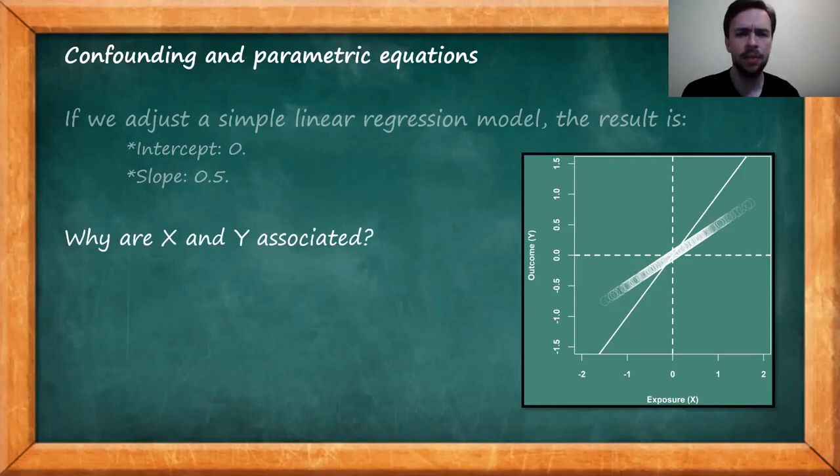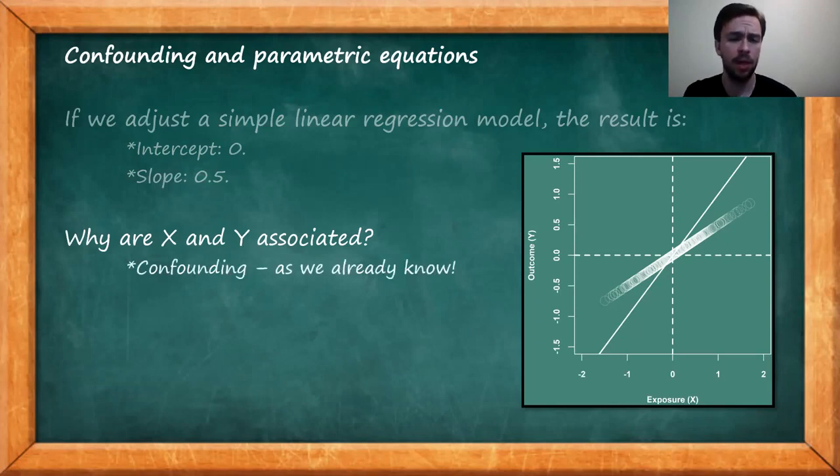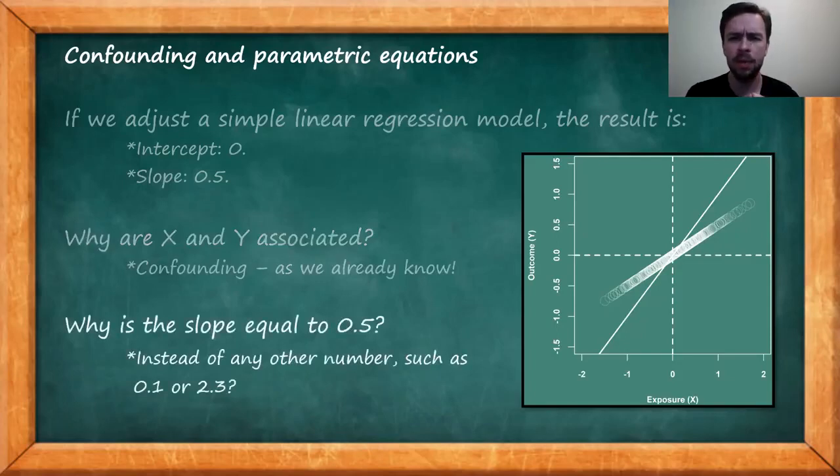Why are X and Y associated, given that there is no causal relationship between them? This is due to confounding, as we already know and discussed. And indeed, since we know the data generating model in this situation, of course X and Y would be associated. But if you go a little bit further, we can ask the following question: Why is the slope equal to 0.5 exactly, instead of any other numbers such as 0.1 or 2.3? We would expect positive confounding, because C has a positive causal effect on X and a positive causal effect on Y. But how do we arrive at this slope of 0.5 precisely? This is the question that we're going to try to answer using parametric equations.